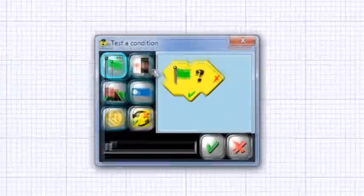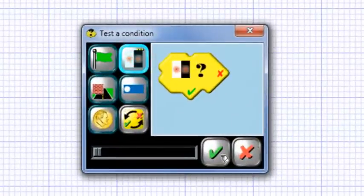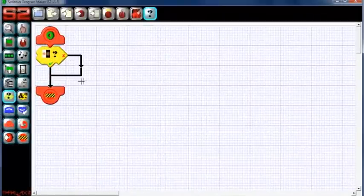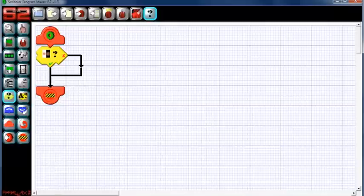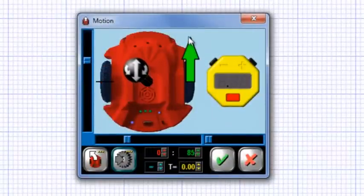Our first sensor combination will be the left sensor over a white line and the right sensor over a black surface. Since the left sensor is over the line, we'll want the S2 to turn left to keep following it.